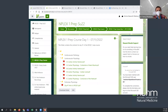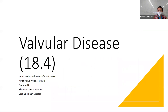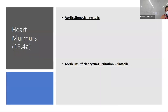Now moving to valvular diseases: heart murmurs, endocarditis, rheumatic heart disease, and carcinoid. There will definitely be questions about endocarditis, rheumatic heart disease, and probably mitral valve prolapse — these seem to appear on every NCLEX exam.